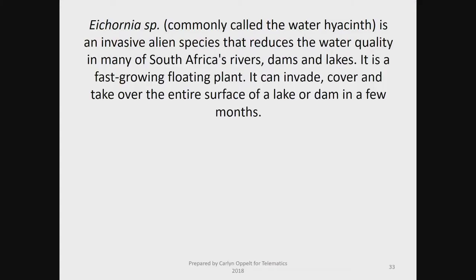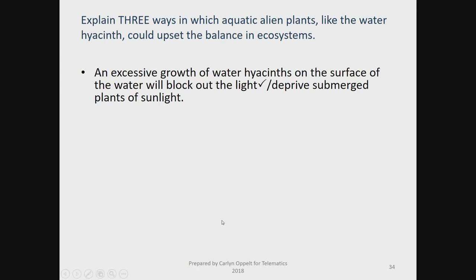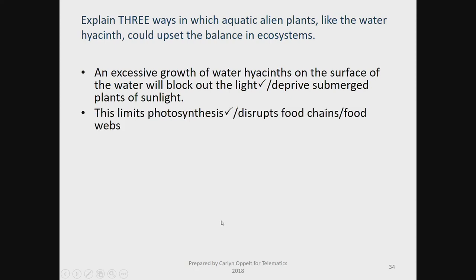The plants will die, the algae will die. The decomposition process also uses oxygen. Oxygen is depleted in the water, and other organisms will die. What you find in the end is a dirty, stagnant pool with no life left. There's a question in your booklet about this — it relates to how the balance in our ecosystem is upset. It can also relate to alien plants that outcompete our own indigenous species, thereby decreasing biodiversity.